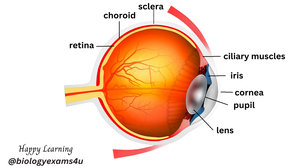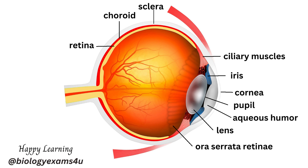The next structure is the lens — a clear part of the eye behind the iris that helps to focus light onto the retina. Aqueous humor is the clear liquid inside the front part of the eye; it nourishes the eye and keeps it inflated.